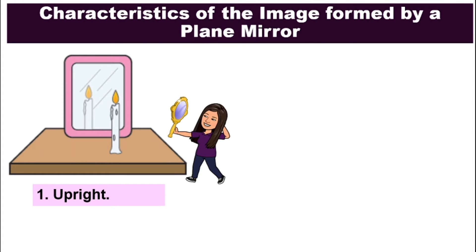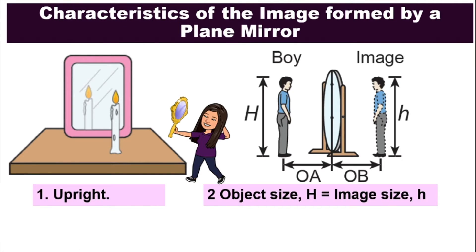Number one, the image is upright. The top and the bottom is the same. For example, the object, the candle here has the flame on top. Same goes to the image, also has the flame on top. So the image is upright.